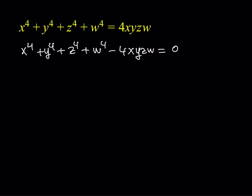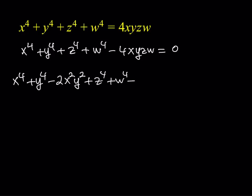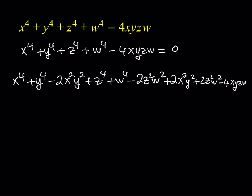I'm going to take x to the fourth plus y to the fourth and subtract two·x²·y² from it. Similarly for z to the fourth and w to the fourth, I'll subtract two·z²·w². Whatever you subtract you have to add back, so we add two·x²·y² plus two·z²·w². Then at the end we still have the minus four·x·y·z·w term, and the whole thing equals zero.